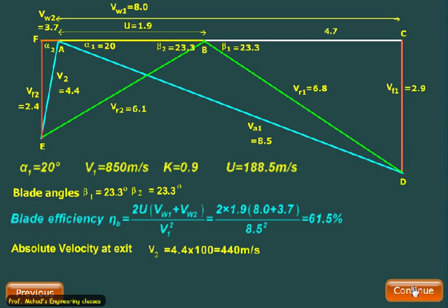Next, we want to calculate the absolute velocity at exit, and the absolute velocity at exit is represented by V_2, that is 4.4, but my scale is 100, so velocity is 440 meters per second.